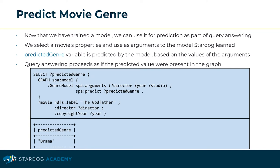Once we have trained the model, we can use it for prediction as part of query answering. We select the movie's properties to use as arguments to the model — such as director, year, and studio. The magic comes with the predicted genre variable during query execution: its value is not going to come from the original dataset, but will instead be predicted by the model based on the values of the arguments passed. The result of the query will show the predicted genre variable, returning drama in this particular case.